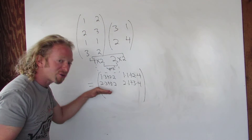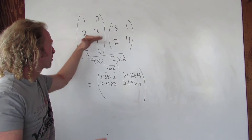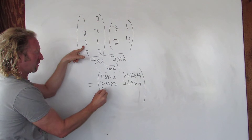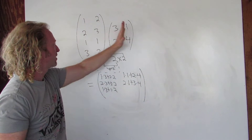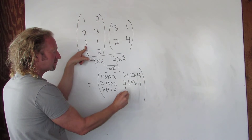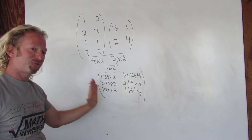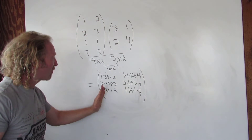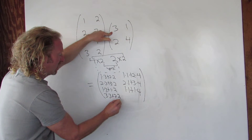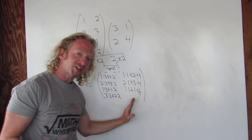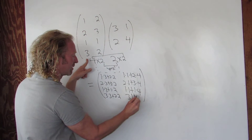Now for the third row, first column: one times three plus one times two. For the third row, second column: one times one plus one times four. For the fourth row, first column: three times three plus two times two. And for the fourth row, second column: three times one plus two times four.